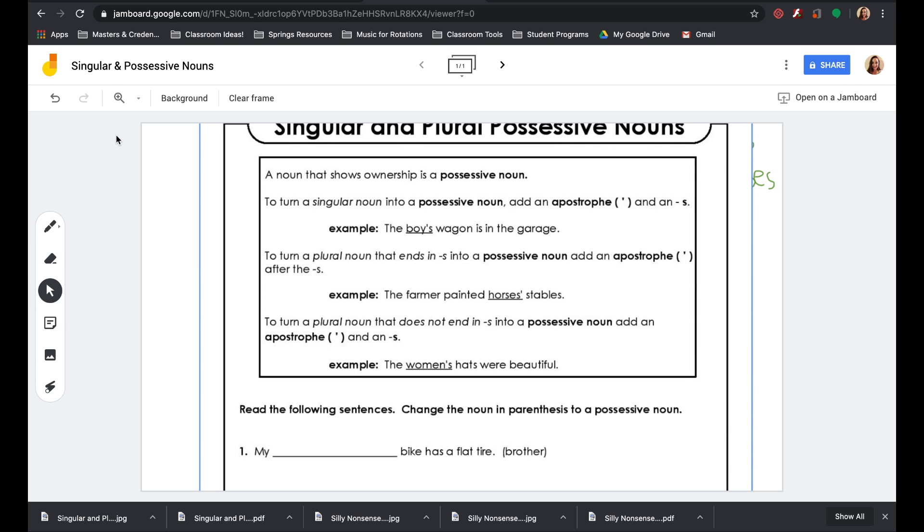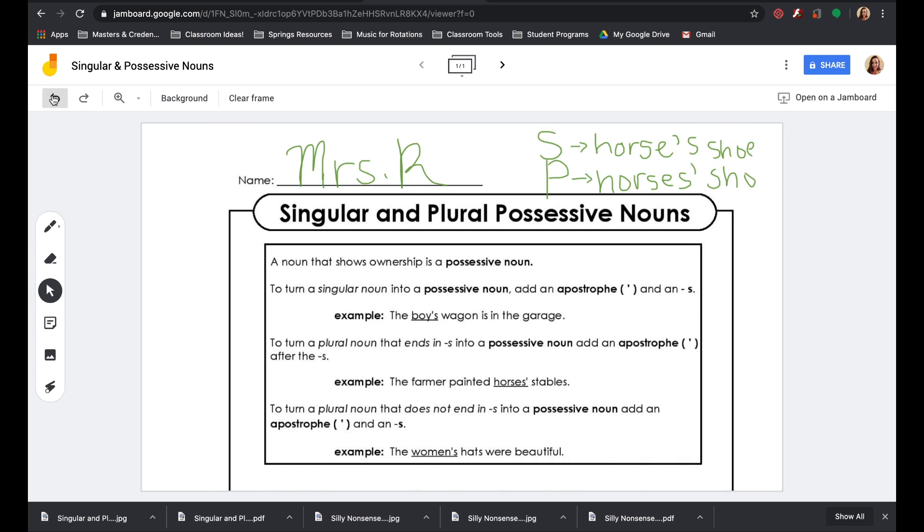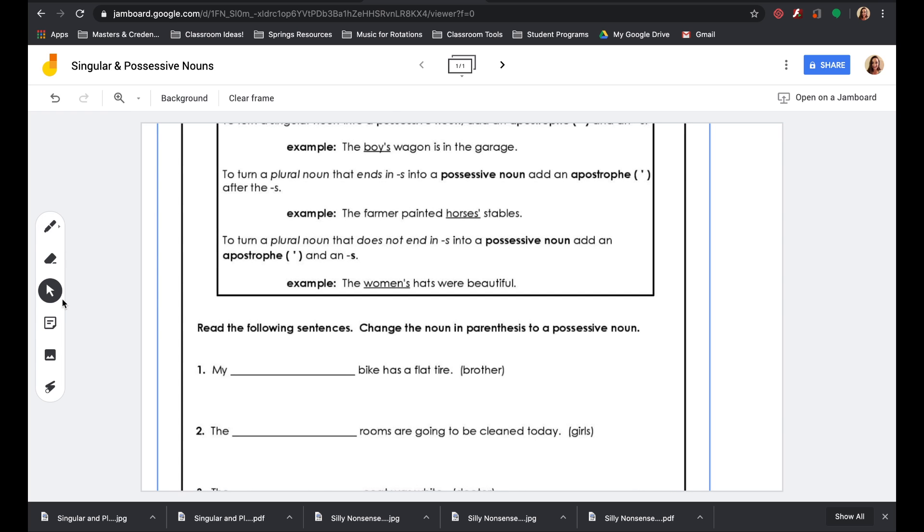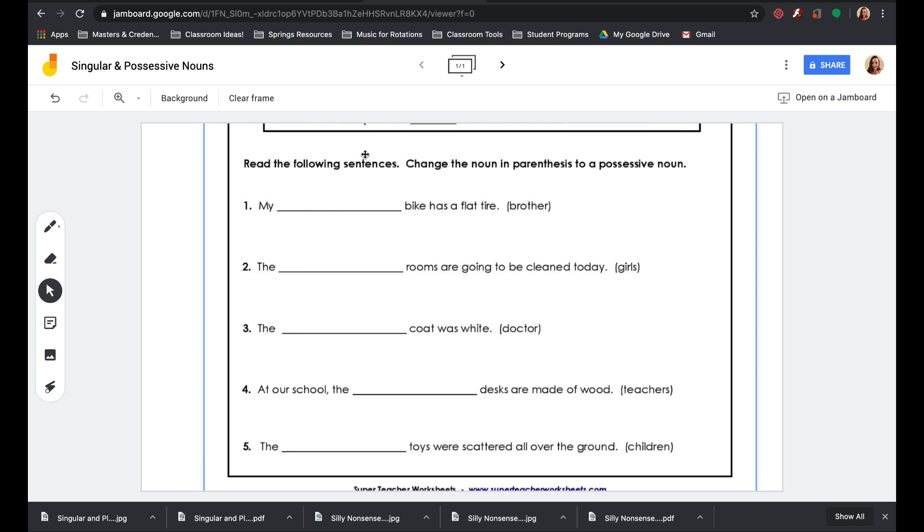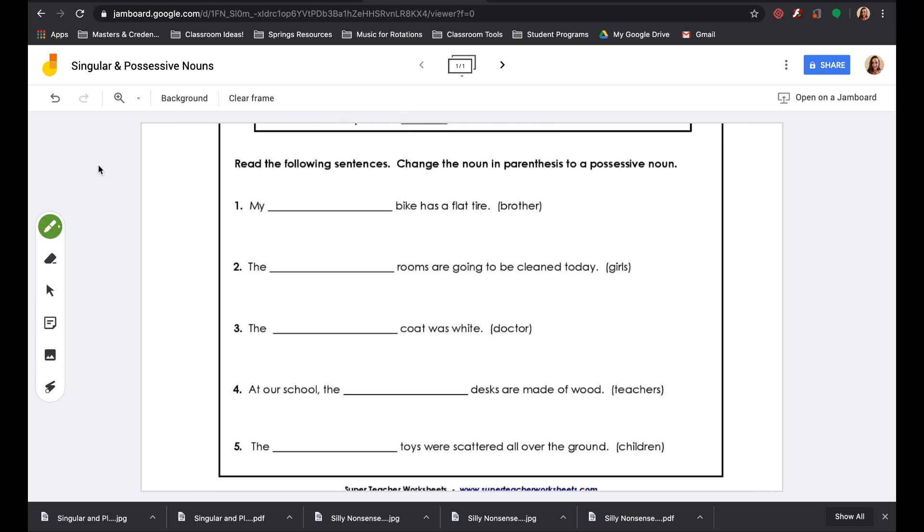Let's go ahead and look at this. I'm going to just erase some of the work that I put up here, and then we'll start on number one together. Number one: my blank has a flat tire. Whose bike is it? It's the brother's bike. We're going to add this word into the empty space, but we need to figure out how to add it first. So we want to say my brother's bike has a flat tire. Let's just go ahead and write brother to begin. We already know that they're not talking about more than one brother. We have one brother in this situation.